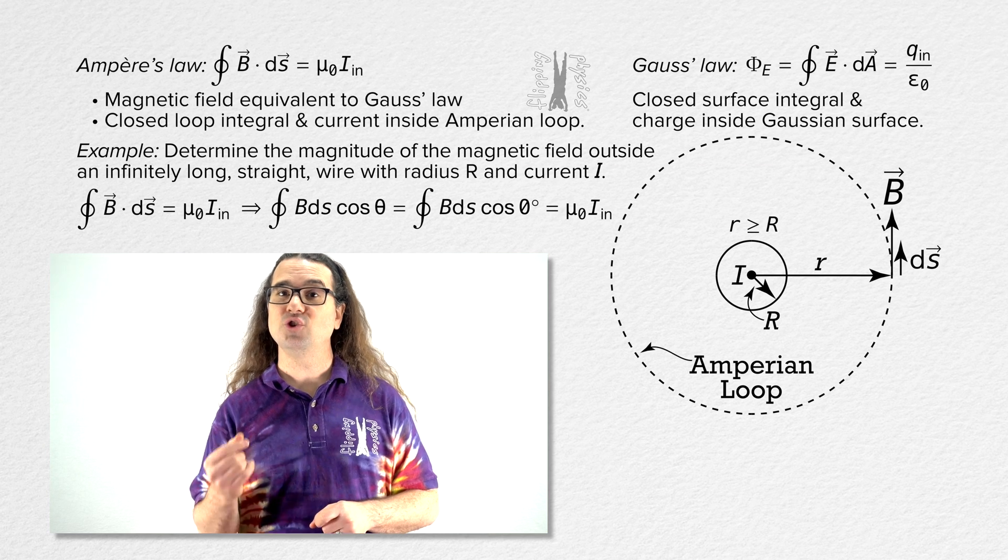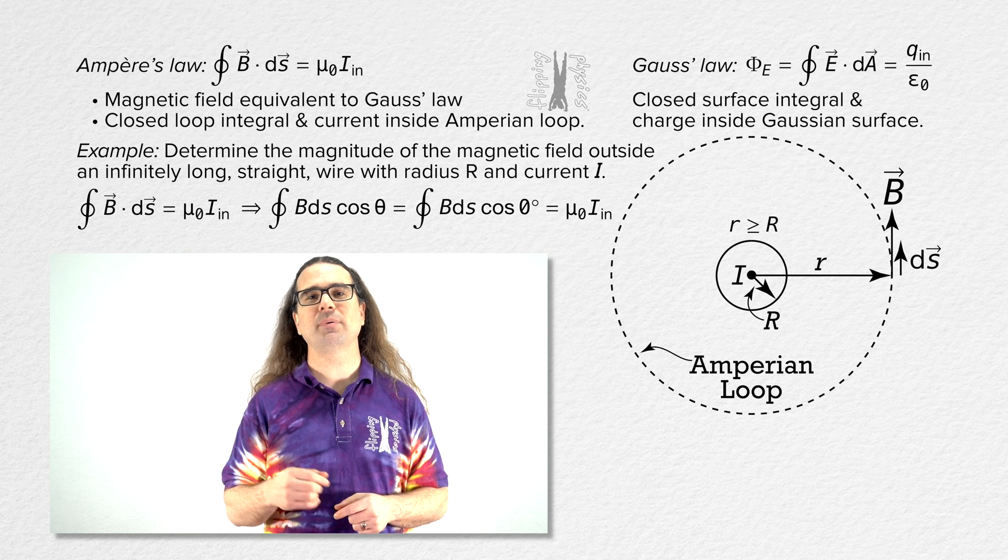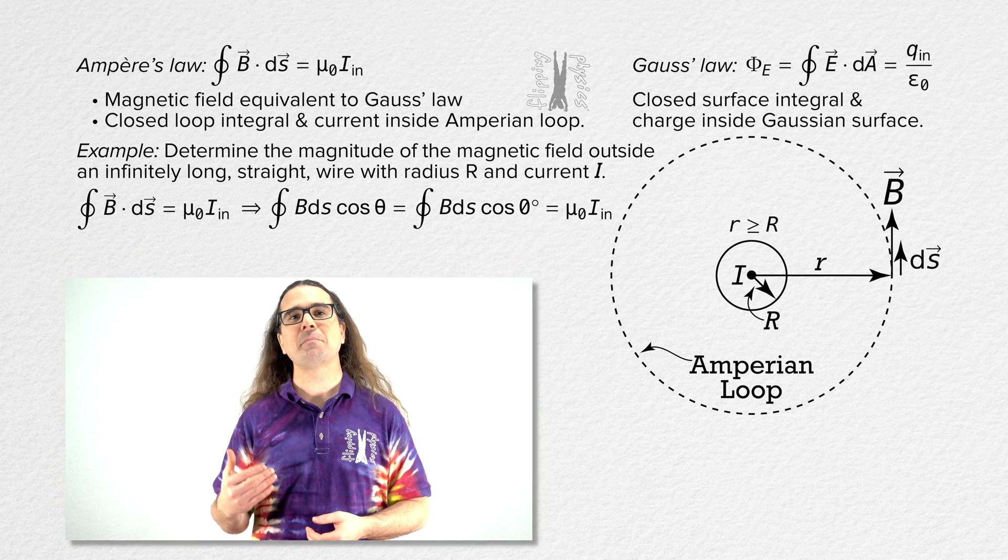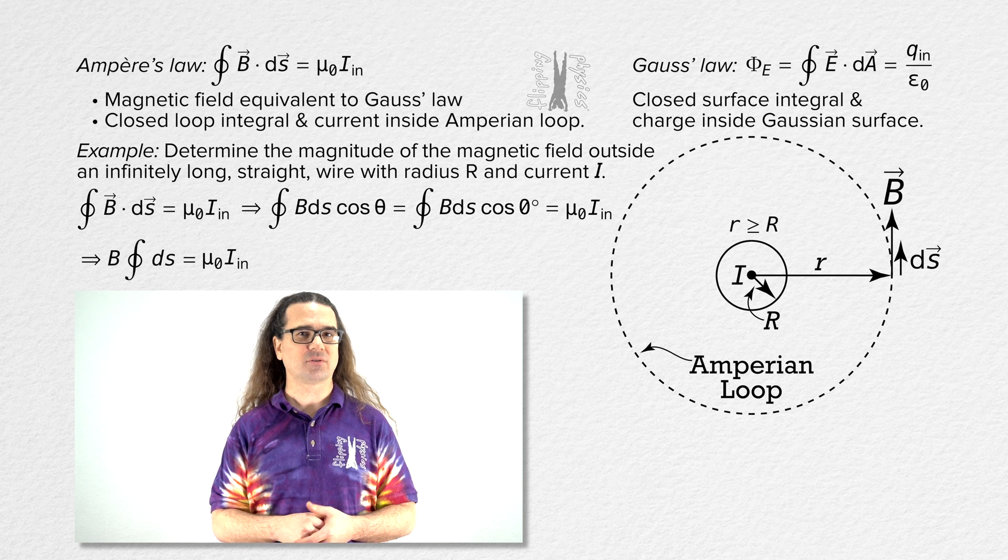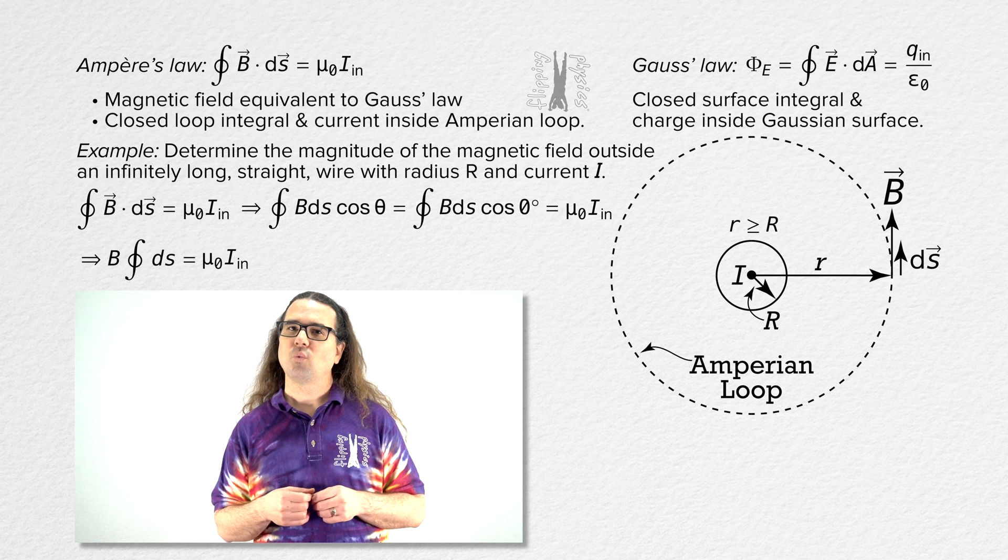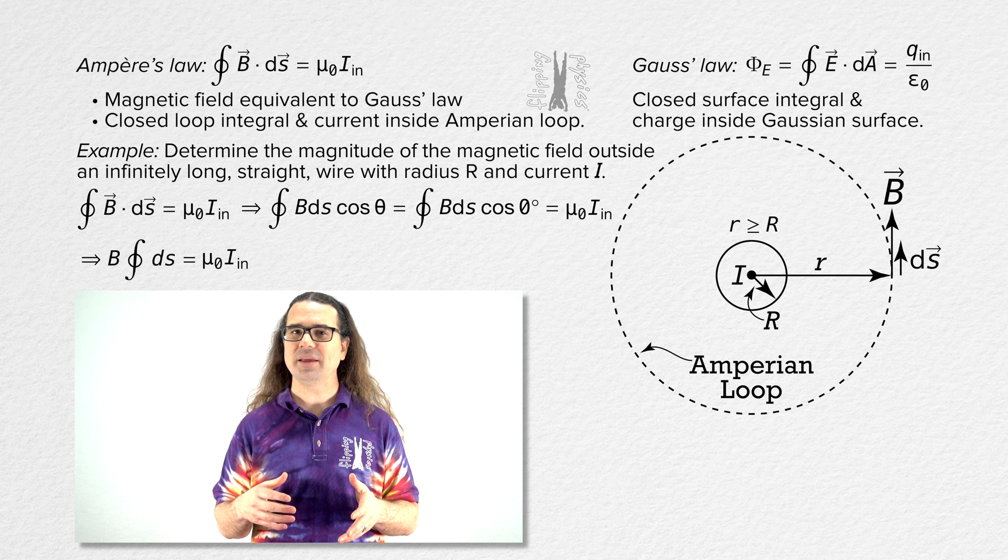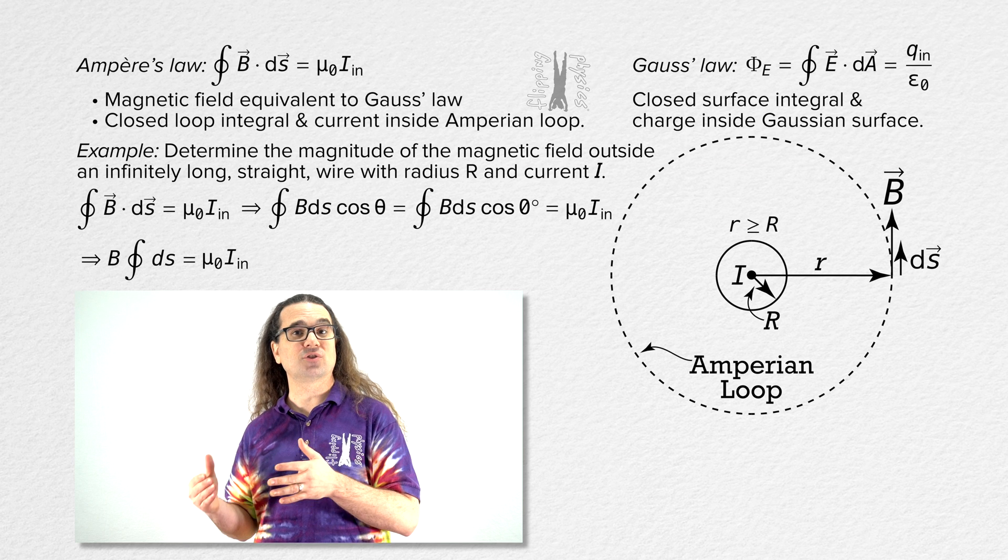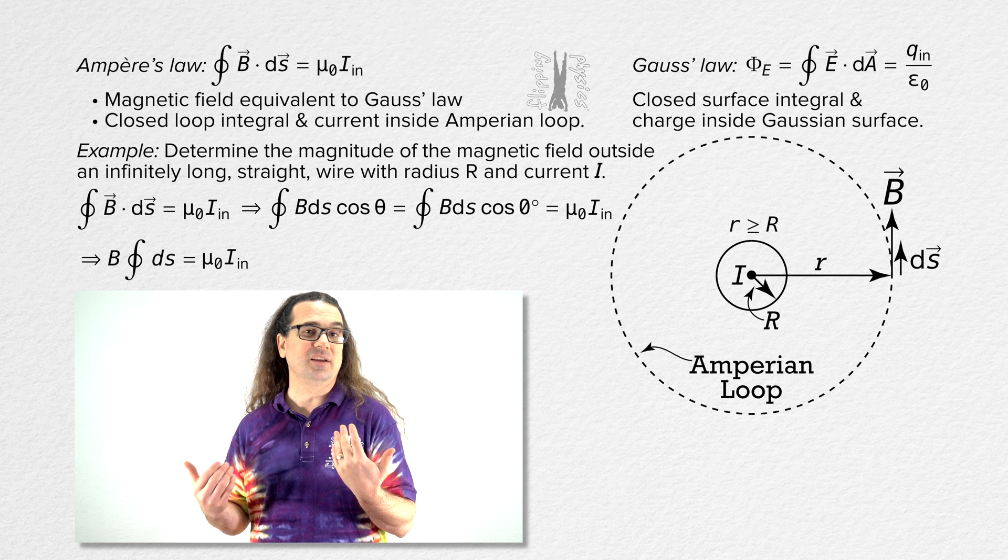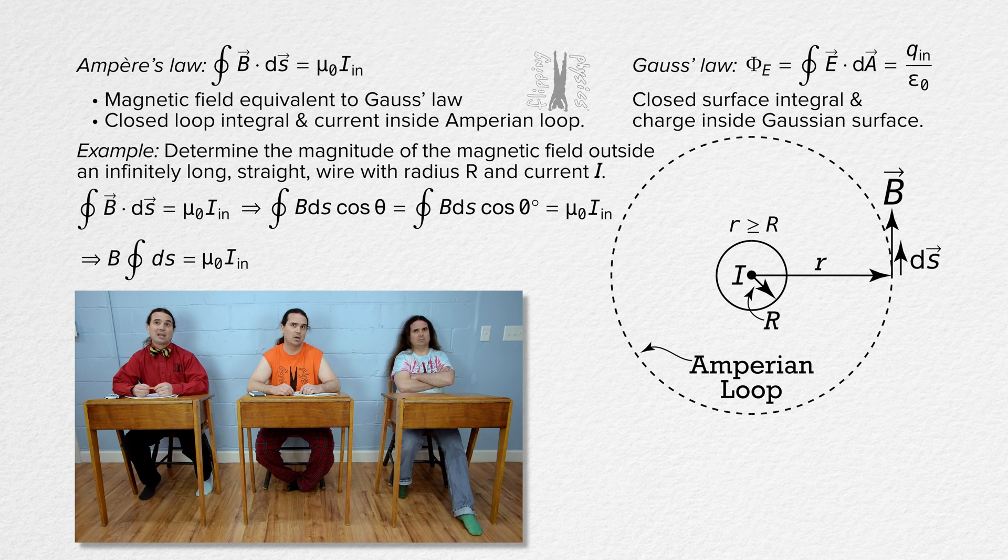And the magnetic field is uniform along the entire Ampereian loop, which means we can take the magnetic field out from under the integral. Bo, what do you think the closed loop integral ds over the Ampereian circle of radius lowercase r equals? Well, that should just be the distance all the way around the circle, which is the circumference of the circle, so 2 pi times lowercase r, right? Correct.